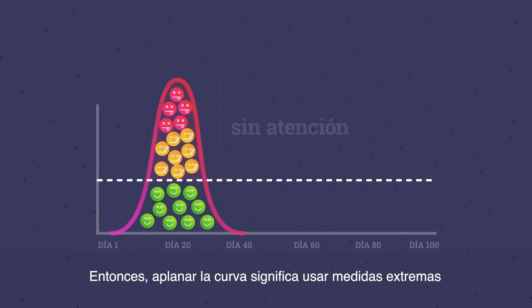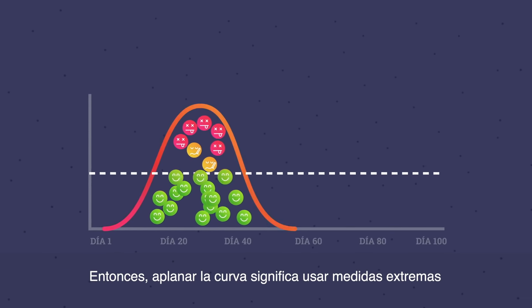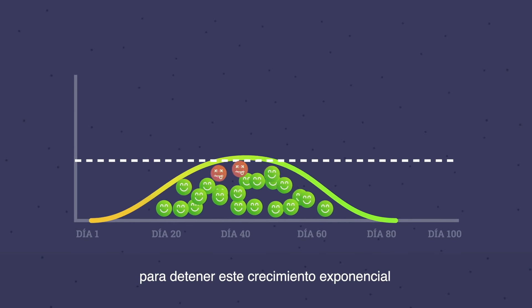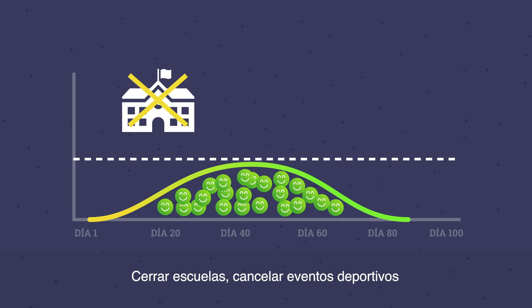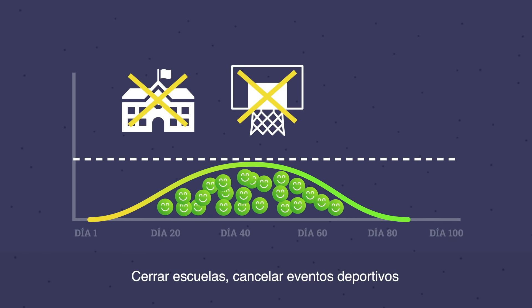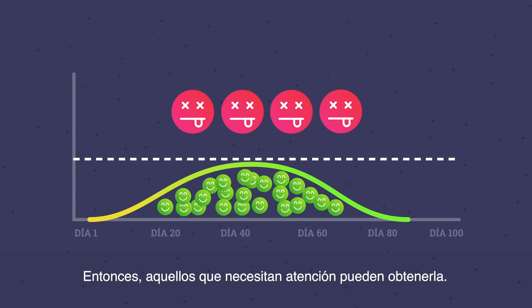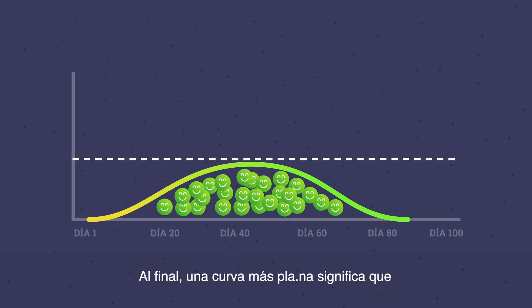So flattening the curve means using extreme measures to slow this exponential growth. Closing schools, canceling sport events, and stopping movement of people is all meant to slow the infection rate, so those who need care can get it.